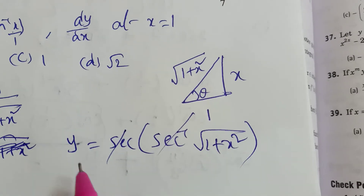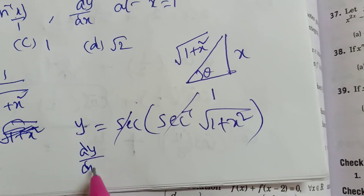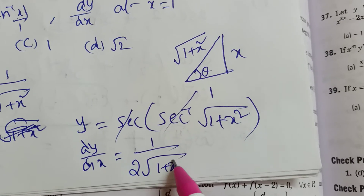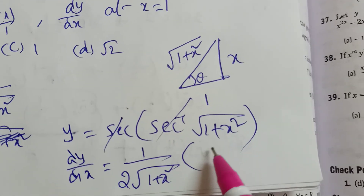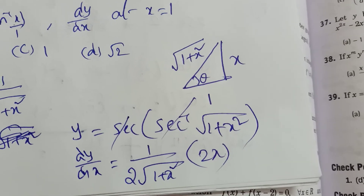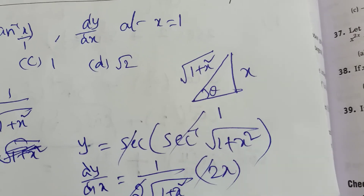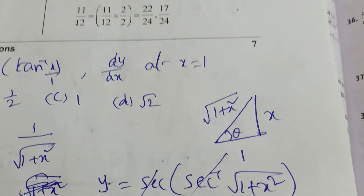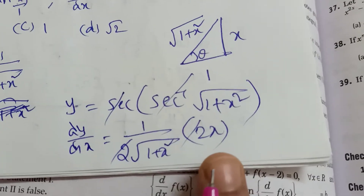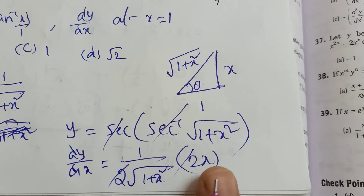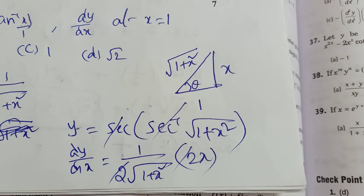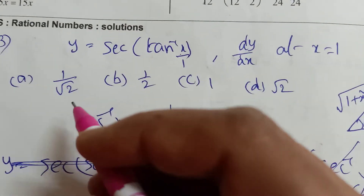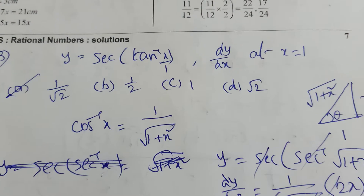Now do derivative. The formula is d by dx of root x equals 1 by 2 root x. So dy by dx equals 1 by 2 root of 1 plus x square into 2x — the 2's cancel. Value is x by root of 1 plus x square. What is given? x equal to 1. Apply x equal to 1: 1 by root of 1 plus 1, which is 1 by root 2. First option A is the answer.